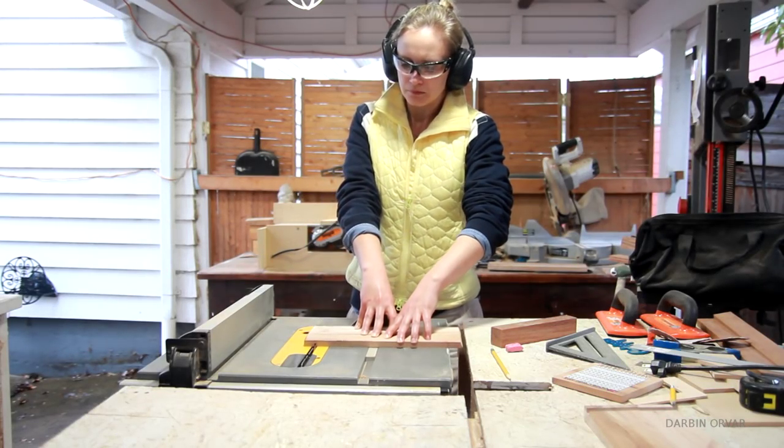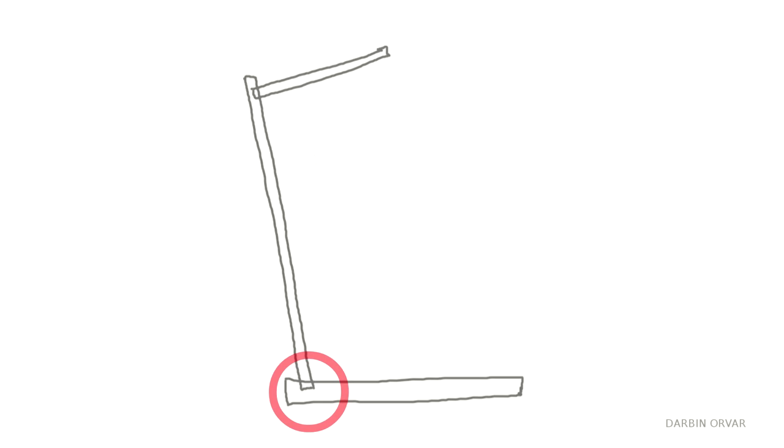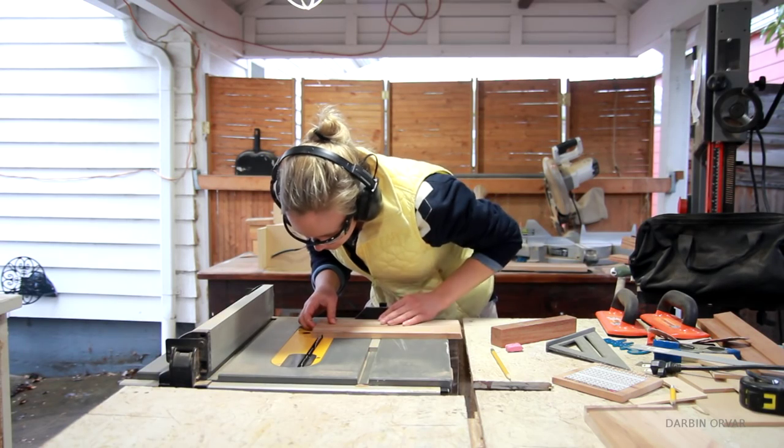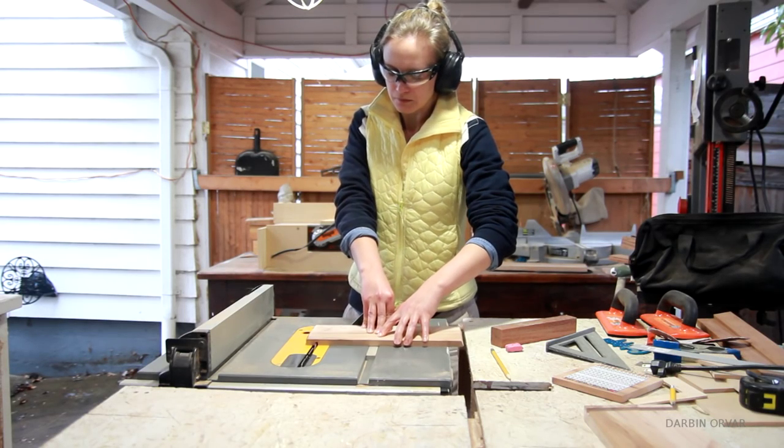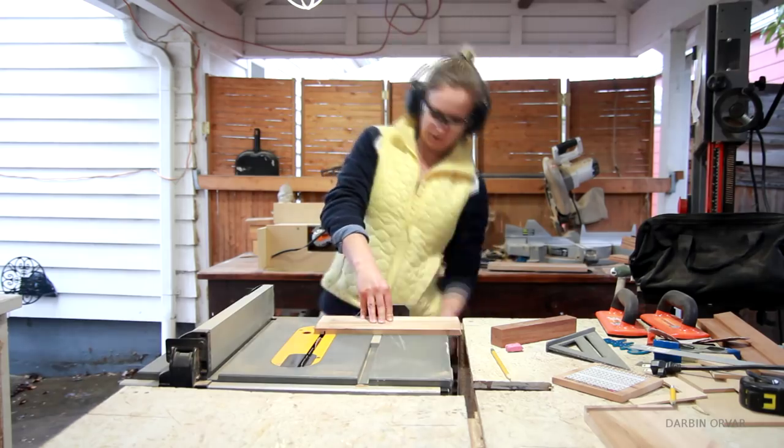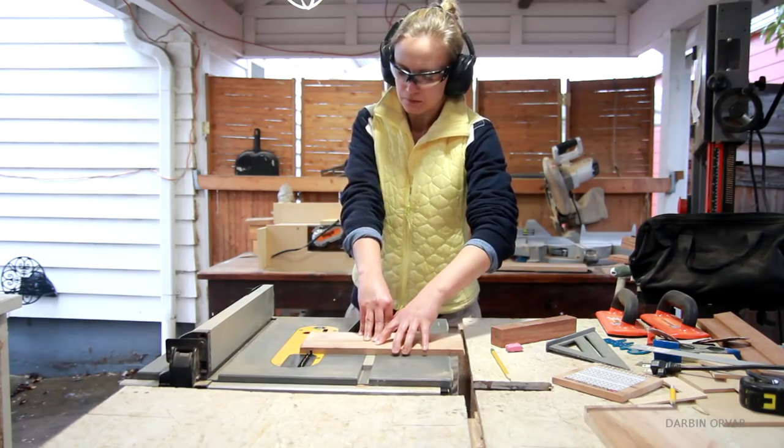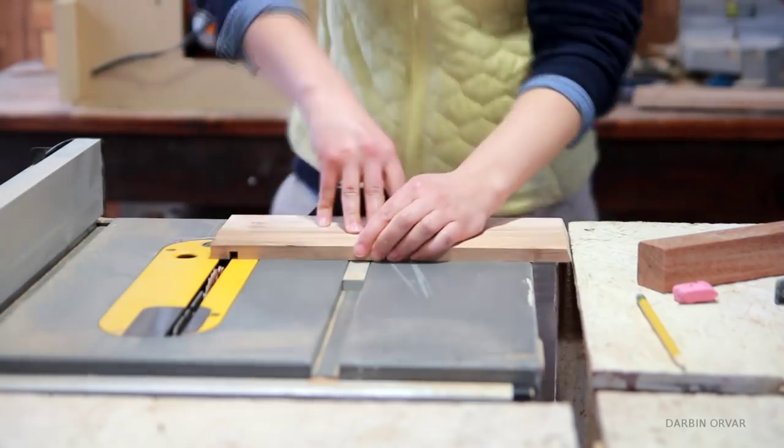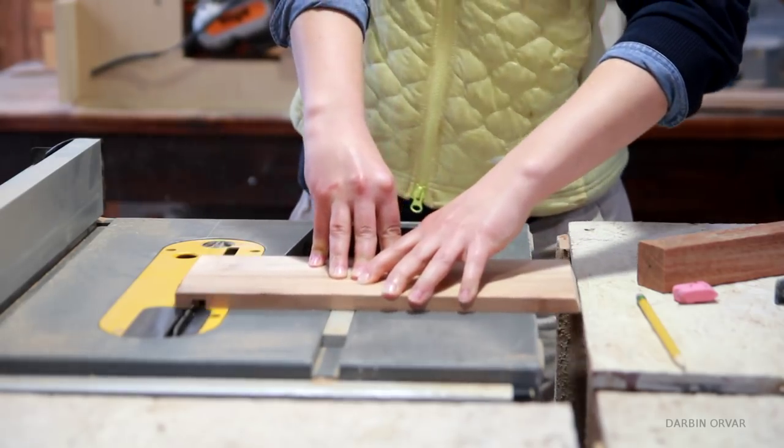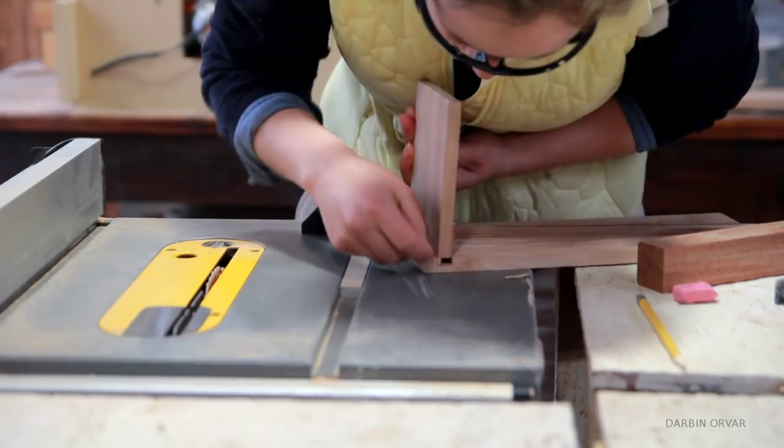So I need to cut a dado in the base, so the back can sit inside it at an angle. I also need a dado in the back, so the light part can sit inside it straight. So I'm starting with cutting a dado on the back piece of the lamp. And I'm simply taking repetitive cuts on the table saw here. I'm creeping up on my marks to make sure I get a tight fit.